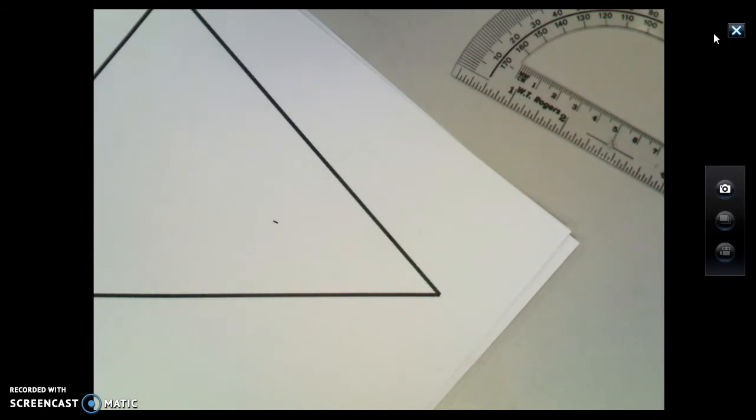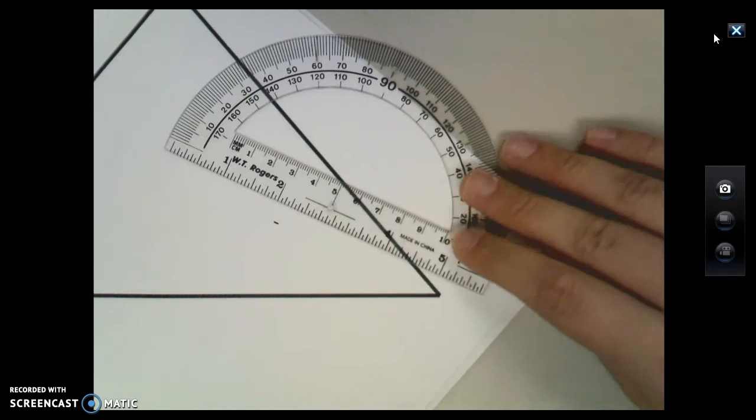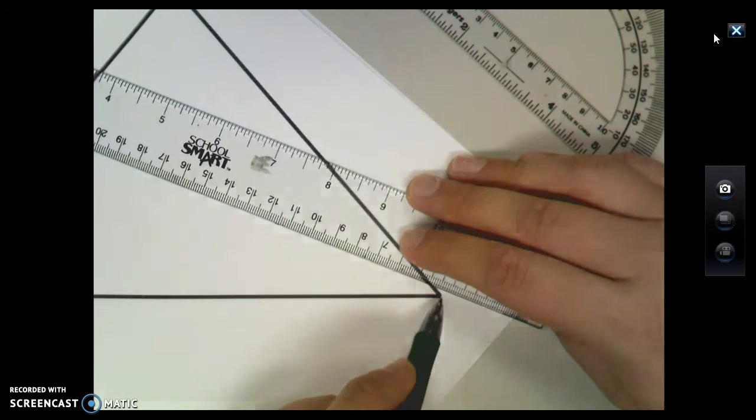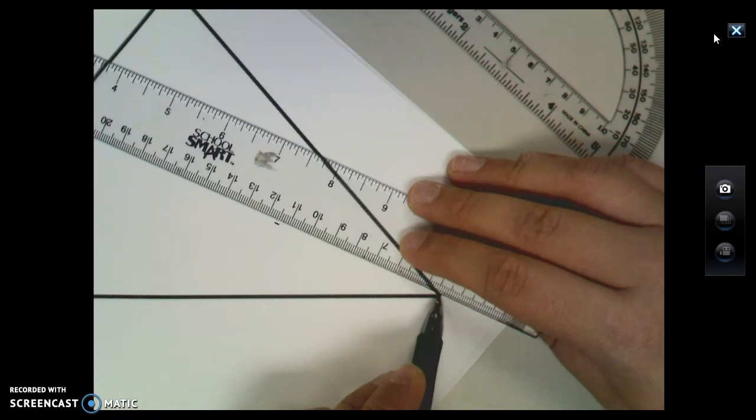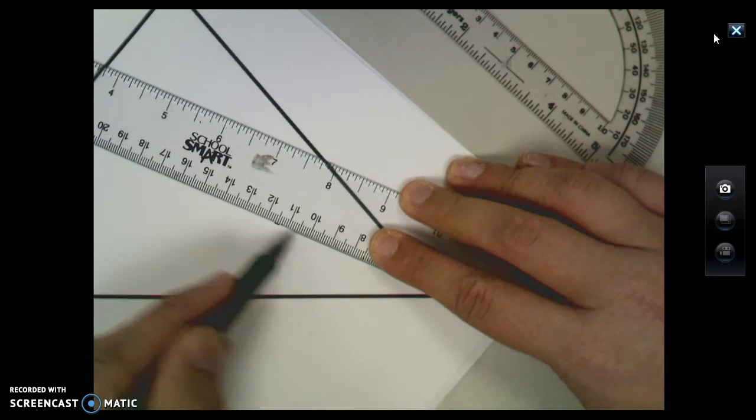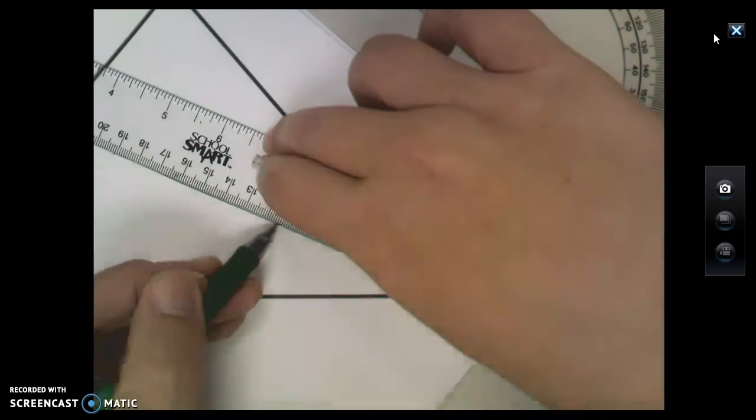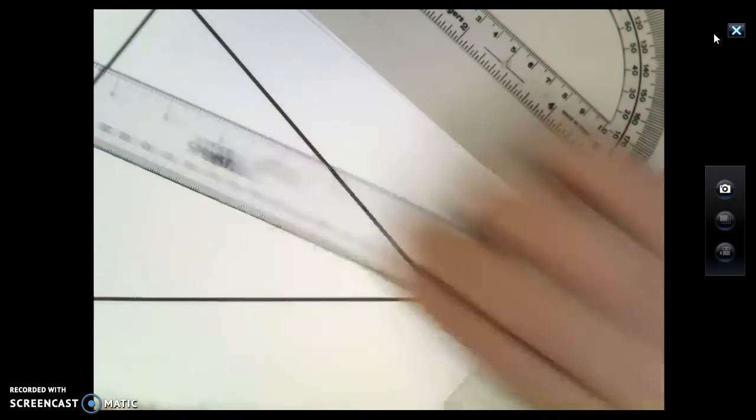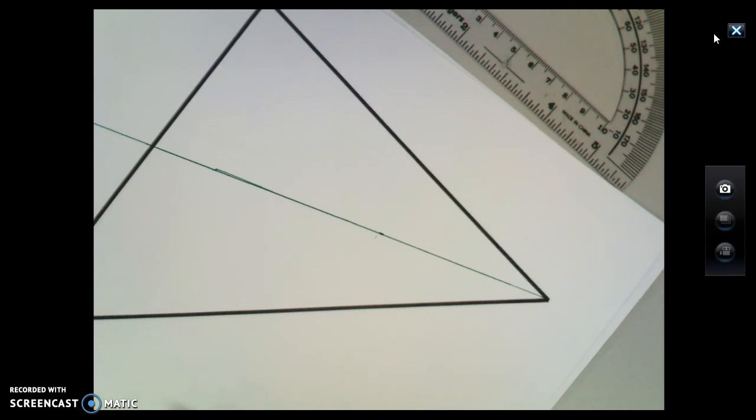Now I'm going to take my straight edge, and that can be a ruler or your protractor. I'm going to connect this to create my segment. So I'm going to start at the vertex and pivot this so that it's going to line up with that mark that I've done. This line that is on the screen here is my angle bisector.